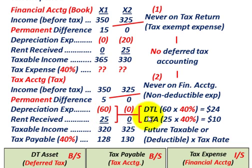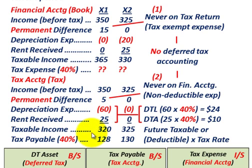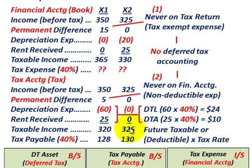We've dealt with our deferred tax liabilities, deferred tax assets, and also this permanent difference. For tax accounting purposes, the permanent difference was never on our financial accounting, so we had to add it back as a non-deductible expense. Our taxable income was $320,000 times the 40% tax rate, so our taxes payable for year X1 is $128,000. For year X2, taxable income of $325,000 times 40% gives us a tax payable of $130,000.